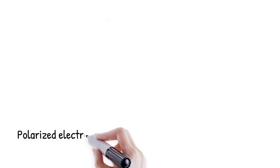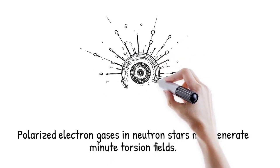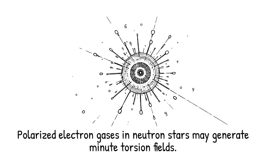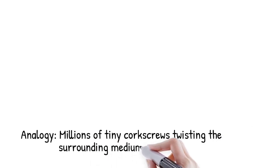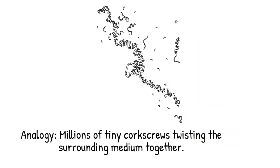Calculations show that fully polarized electron gases and neutron stars could generate minute torsion fields affecting the star's equation of state, like having millions of tiny corkscrews all turned in unison. They could twist the surrounding medium, but each corkscrew's individual twist is nearly imperceptible.